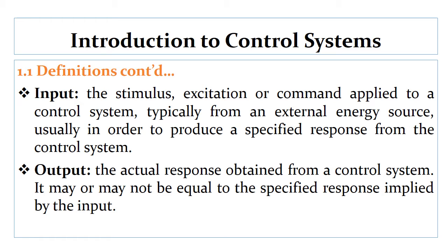Definition number five is output. The output is the actual response obtained from a control system. It may or may not be equal to the specified response implied by the input. For example, if the input was 60 degrees Celsius, you expect an output of 60 degrees Celsius, but it may or may not be equal to the input.